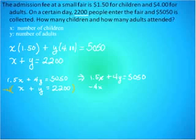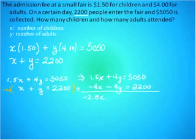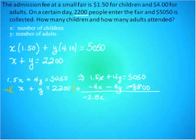The bottom equation becomes negative 4x minus 4y equal to negative 8,800 — I need to multiply 2,200 by negative 4, giving negative 8,800. Adding the two equations together, 1.5x minus 4x gives negative 2.5x, the y's cancel, and 5,050 plus negative 8,800 gives negative 3,750. Dividing both sides by negative 2.5 gives x equal to 1,500.